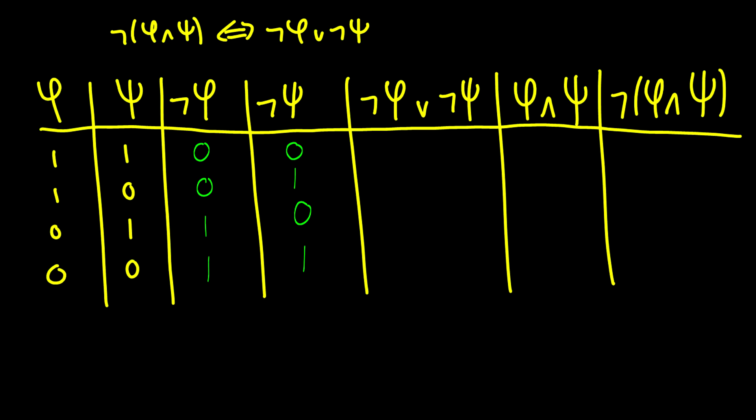Now for the disjunct, well, at least one of them has to be true here. So zero zero gives us a zero. A zero and a one will give us a one. A one and a zero will give us a one. And a one and a one will give us a one. Okay. Now what about the conjunct table for φ∧ψ? Well, by now you should know that this is a one, zero, zero, zero truth table with two statements.